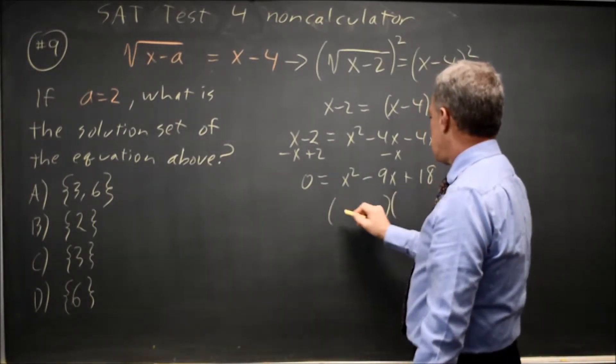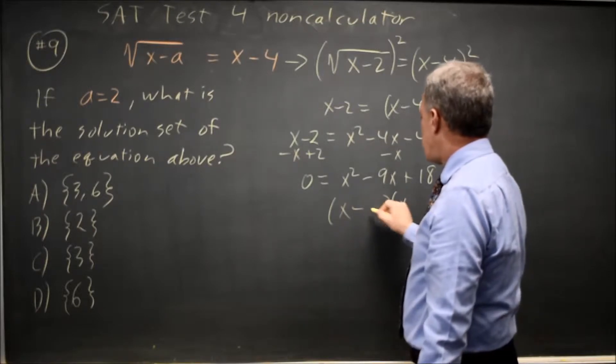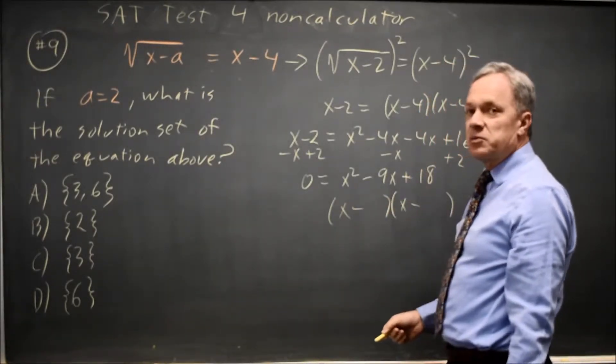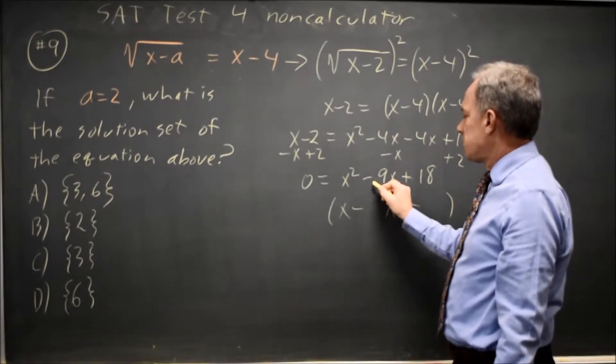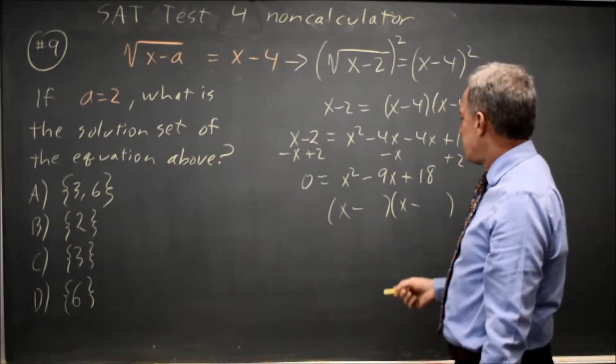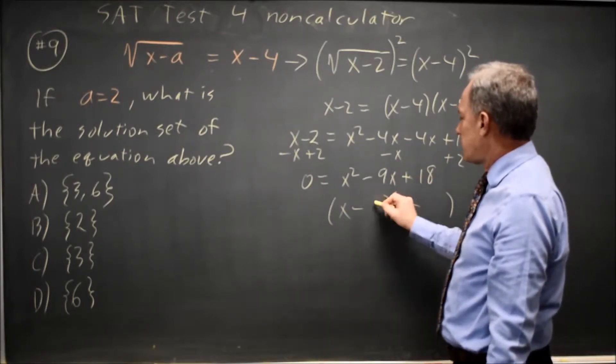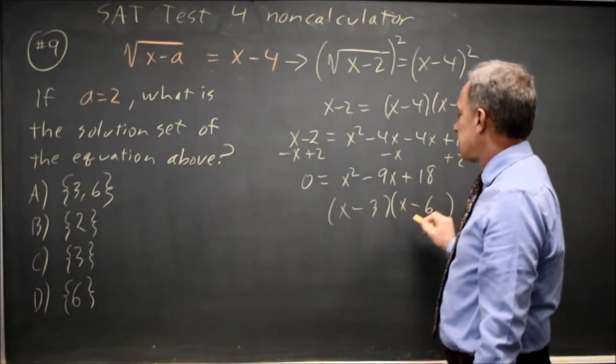Factoring, I get x minus... and minus. The last number is positive, so they have the same sign. The middle term is negative, so they're both negative. I need two numbers whose product is 18 and sum is 9, that would be 3 and 6.